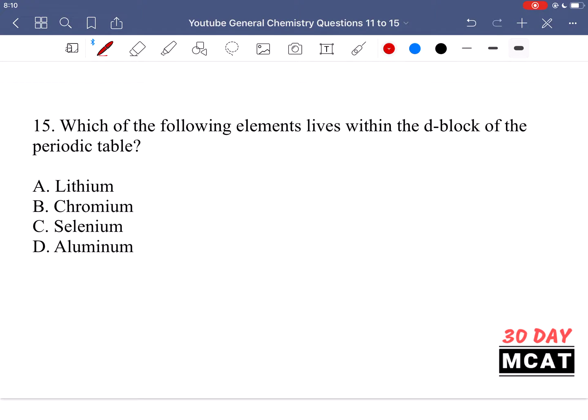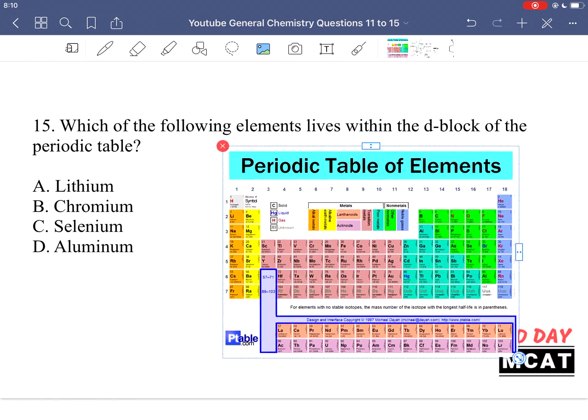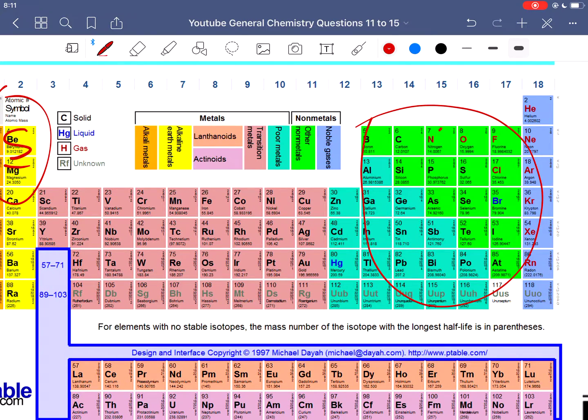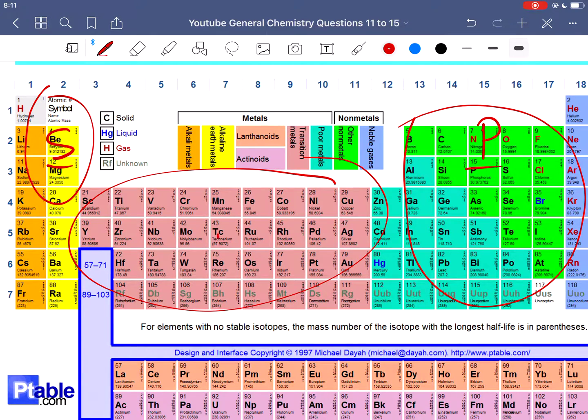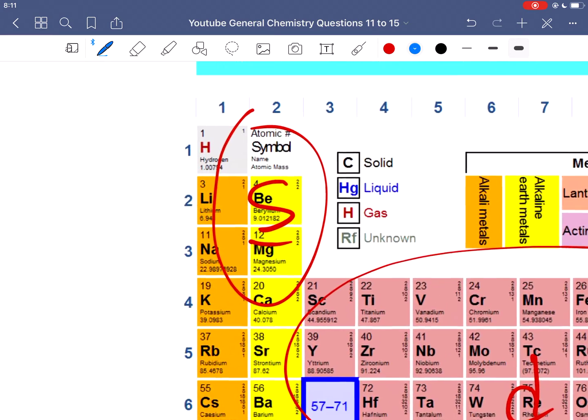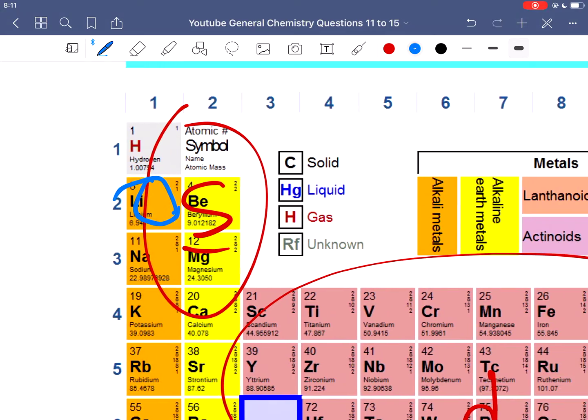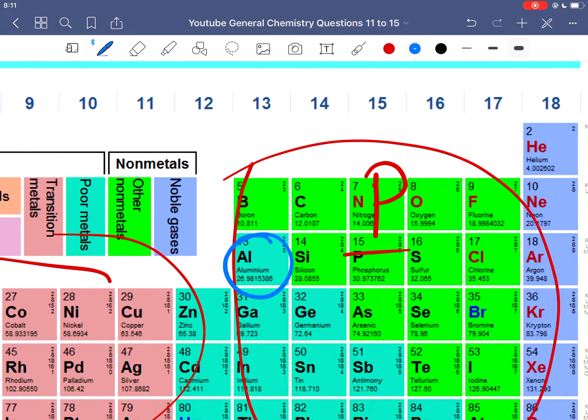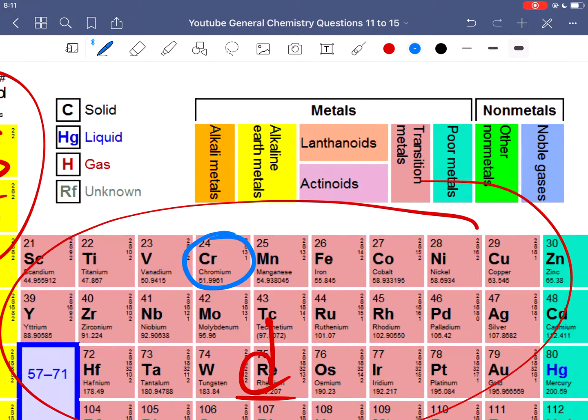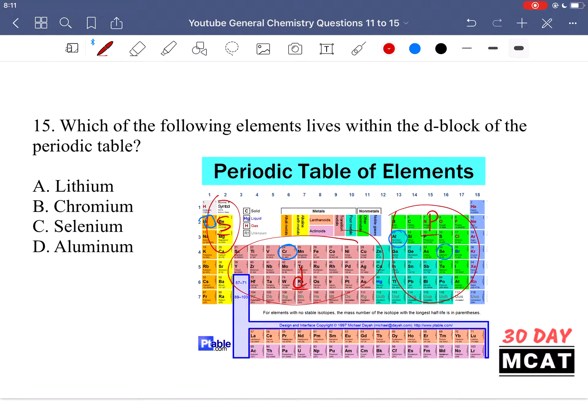In question 15, we're asked which of the following elements lives within the D block of the periodic table. So in the periodic table, these first two rows, or first two columns, the first two groups, are the S blocks. Over here, these guys are the P blocks. And then these guys over here are the D blocks. And our options are lithium, chromium, selenium, and aluminum. Lithium is over here. So it's in the S block. Aluminum is over here in the P block. Selenium also in the P block. And then the only thing in the D block is chromium, which is over here in the transition metals. So think D block, think the transition metals. And chromium is the only one of the options given, which is transition metal. So B is our correct answer.